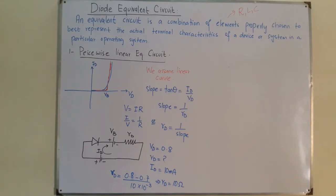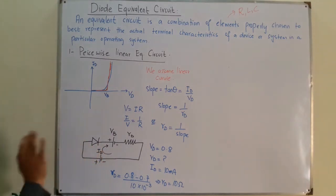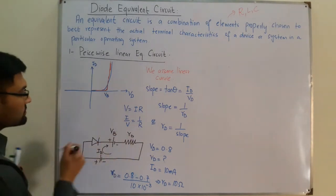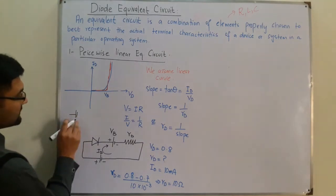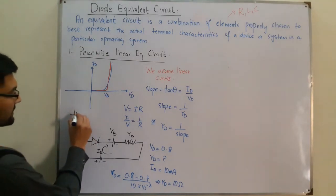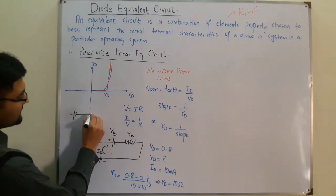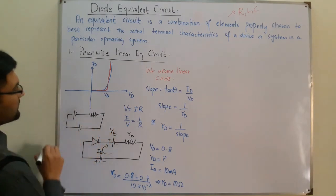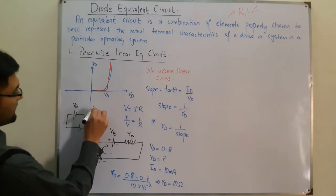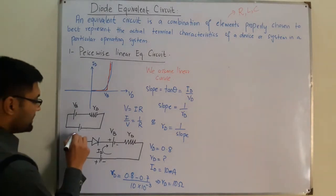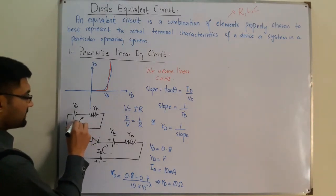Practically, when using this circuit in numerical problems, the ideal diode is not mandatory to draw. The diode is replaced by the barrier potential VB and the diode resistance RD, with the applied potential VD and current ID flowing through the circuit.